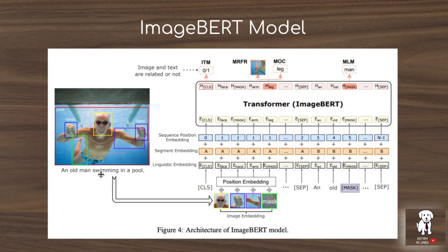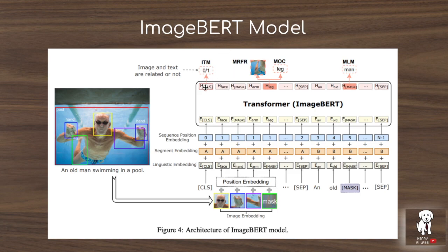The idea is that you have raw image-text data pairs. First you parse the image data by passing it through a Faster RCNN model, which produces regions of interest bounding boxes that form the visual tokens in the sequence inputted to the transformer. Self-attention then attends to both visual tokens and word tokens. The visual token sequence is embedded with segment embedding A and the word sequence with segment embedding B, similar to BERT's A and B sentences and next sentence prediction.